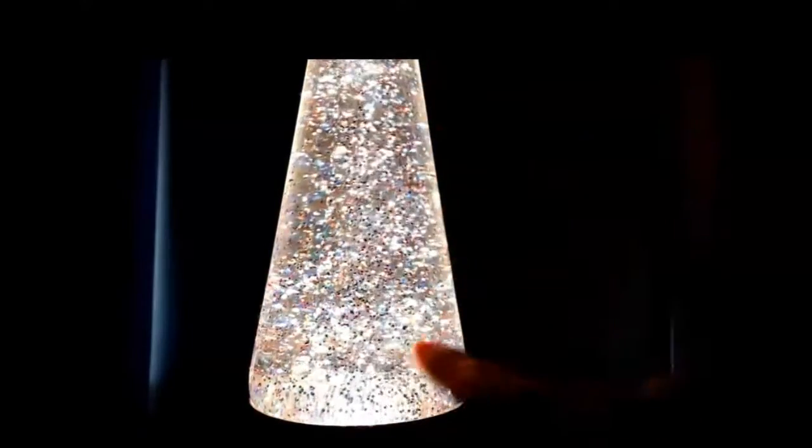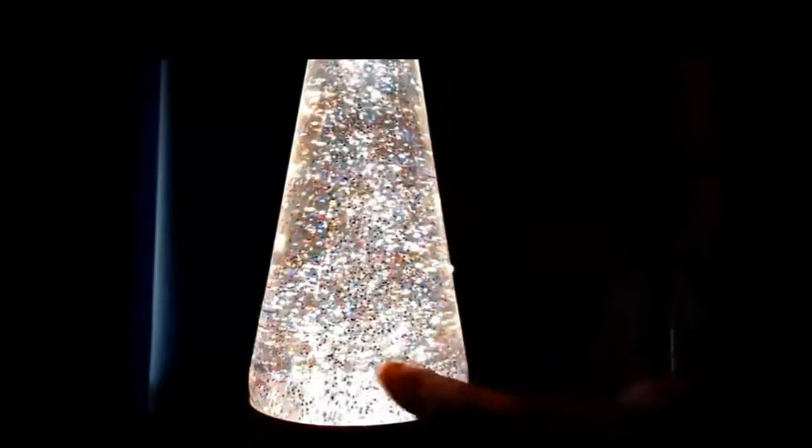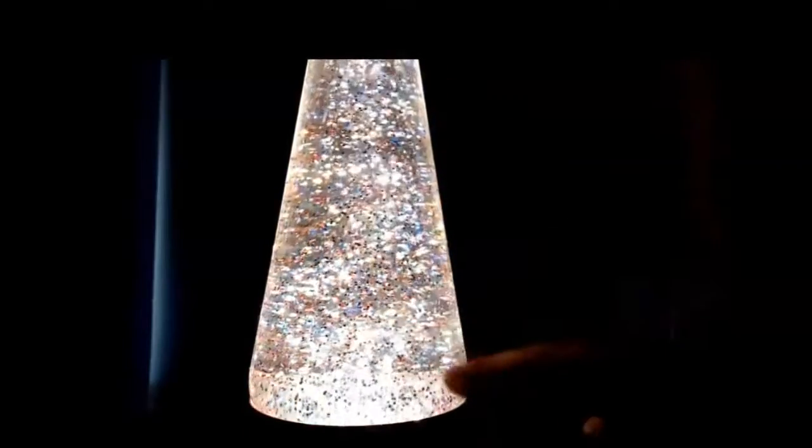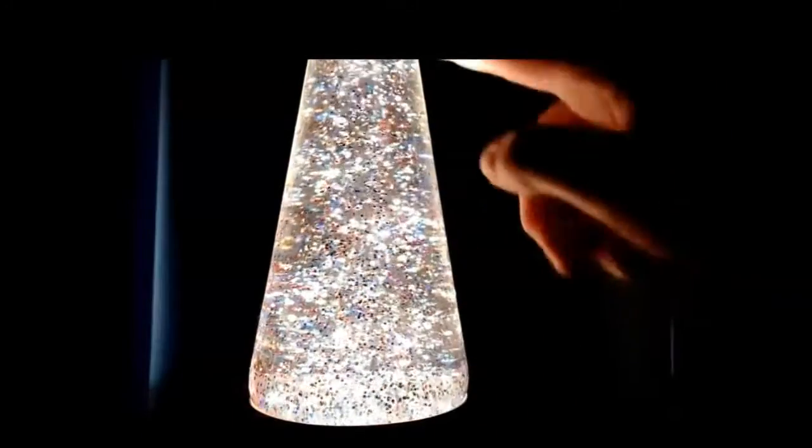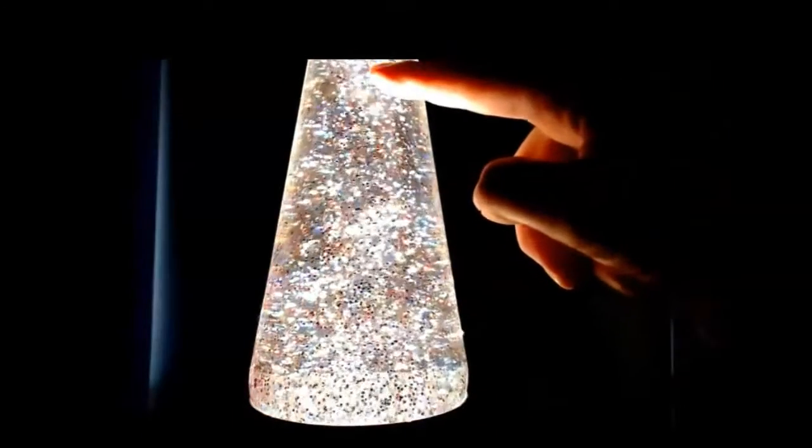So you have this constant circular pattern going on in the lava lamp that's caused by the density differences depending on whether the water is by the heat source or up away from the heat source.